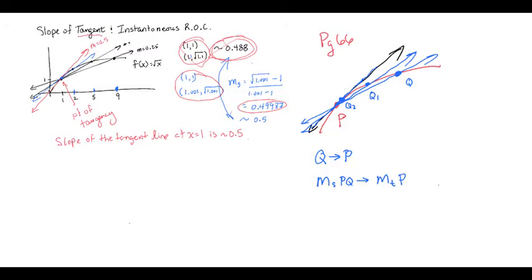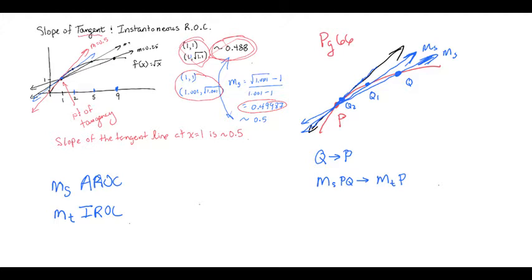The average rate of change between P and Q becomes closer to the value of the instantaneous rate of change at P. All of these blue lines on the graph are slopes of secant lines. The slope of a secant line refers to the average rate of change. The slope of a tangent line refers to the instantaneous rate of change. Average is referring to the rate of change between two points; instantaneous is referring to the rate of change at an instant of time, or at a single point.